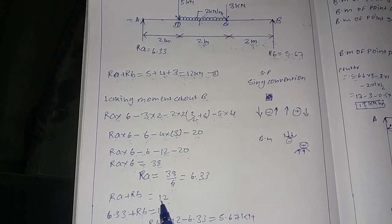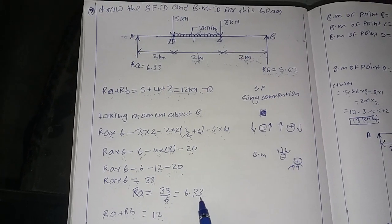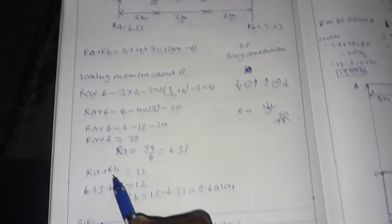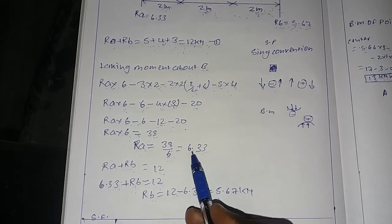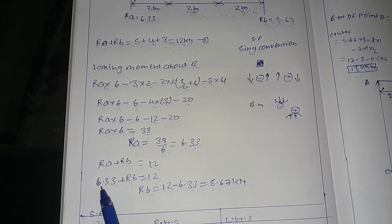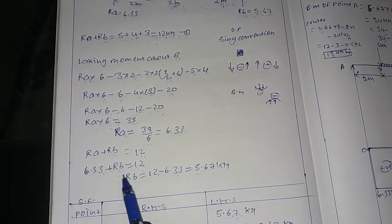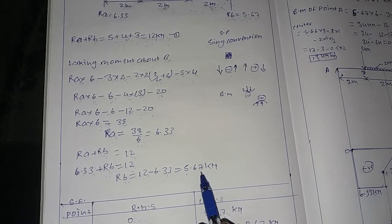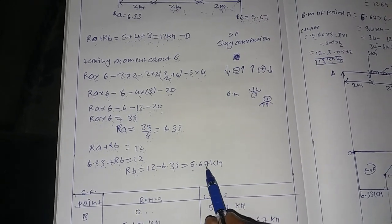From Equation 1, RA plus RB equals 12. With RA equal to 6.33, we get RB equals 12 minus 6.33 equals 5.67 kN. So RA equals 6.33 kN and RB equals 5.67 kN.